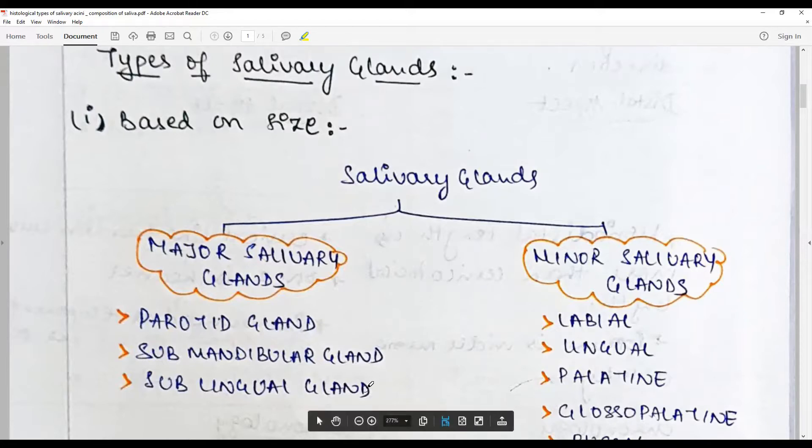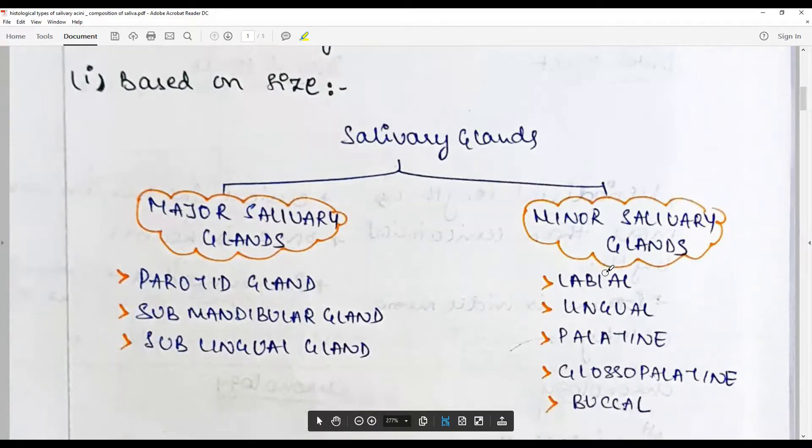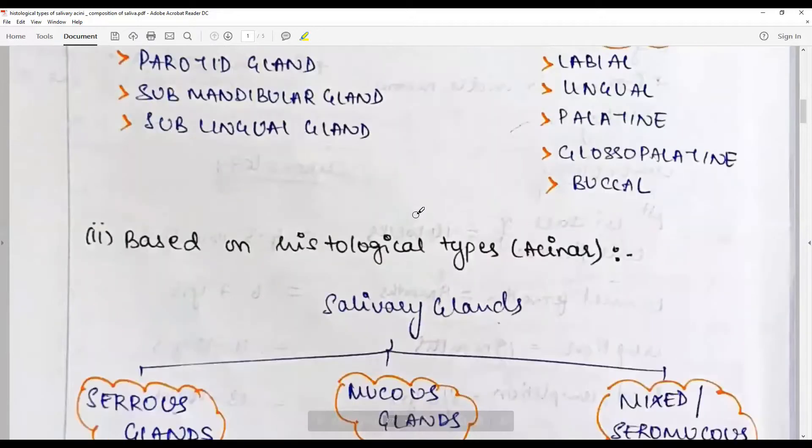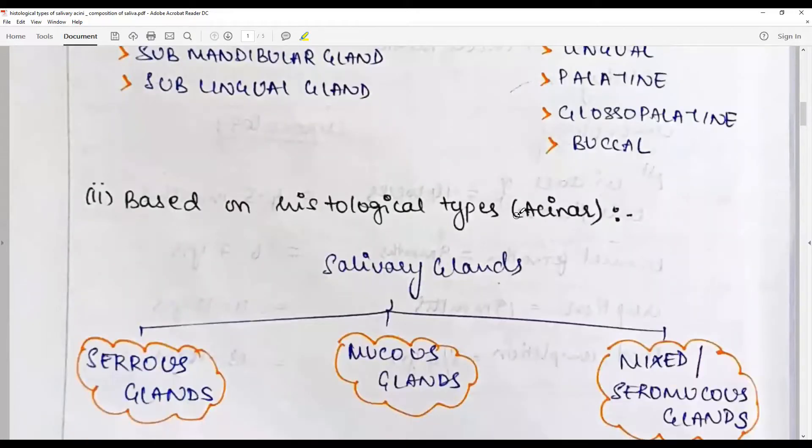Minor salivary glands contribute 1 to 2 percent and include the labial, lingual, palatine, glossopalatine, buccal glands, and those even in your throat and the pharynx and oropharynx.